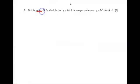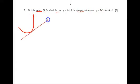Question 2: find the values of k for which the line is a tangent to the curve. A tangent touches the curve only once. For this, we use the discriminant: b² − 4ac = 0. We substitute the line equation into the curve equation, replacing y with kx + 3, giving kx + 3 = 2x² + 4x + k − 1. Then we move the left side to the right.